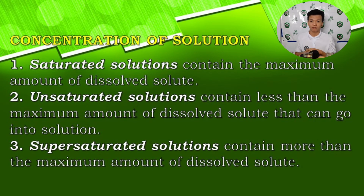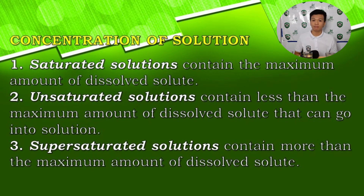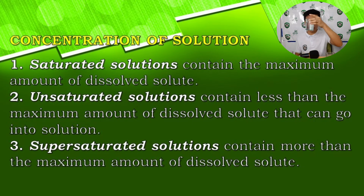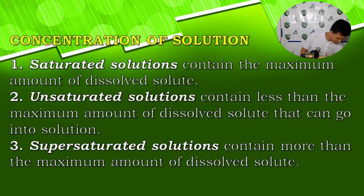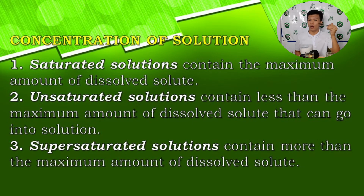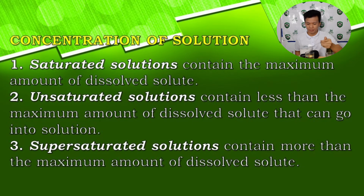Let's start with the saturated solution. A saturated solution contains the maximum amount of solute that it can dissolve. If we put more solute in it, it will not be dissolved because it already contains the maximum. Which among these three glasses is a saturated solution? That's correct — it's glass B. We saw that all of the salt got dissolved in glass B.